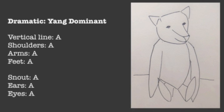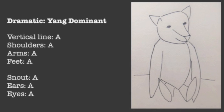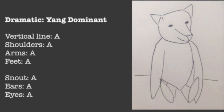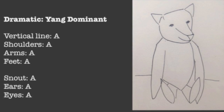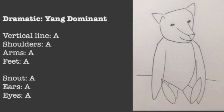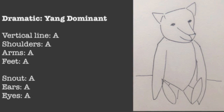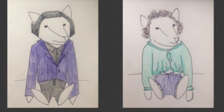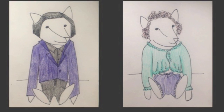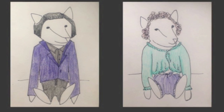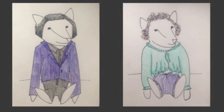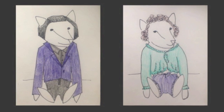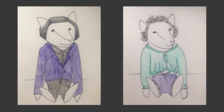First we have Dramatic. This teddy bear has a pretty long vertical line and his shoulders are pretty sharp, his arms are pretty long, his feet are pretty angular, his snout is a little bit angular, his ears are pretty sharp and angled, and his eyes are almond shaped and small. When he puts on some stiff fabric with geometrics on the left, he looks really awesome, but on the right with frilly lightweight fabrics and intricate detailing, it looks a little bit separate from him.